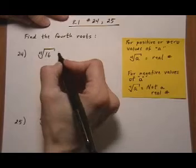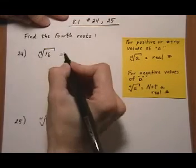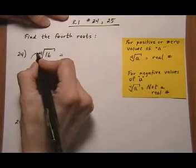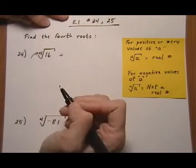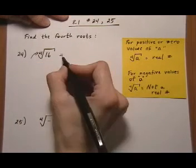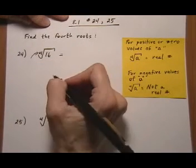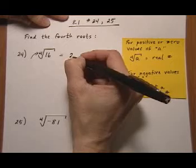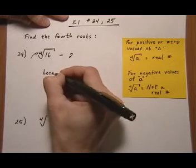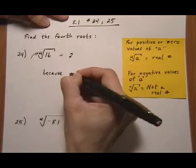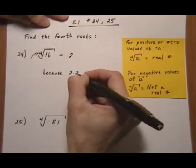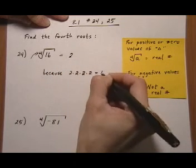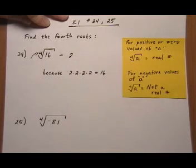Fourth root of 16. We want a number times itself four times that gives us 16, so the answer would be 2. Because 2 times 2 times 2 times 2 equals 16.